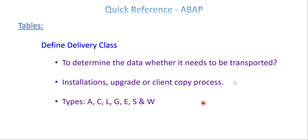This delivery class indicates whether the data is very important for the business to move. The types you have seen are A, C, L, G — mostly we go with A, master data and transaction data. And there is an option to store temporary data. If the data is temporary, business may decide they don't want to go with this table data for the client copy or upgrade process. So delivery class defines how important the data is to the business, with the help of these types.